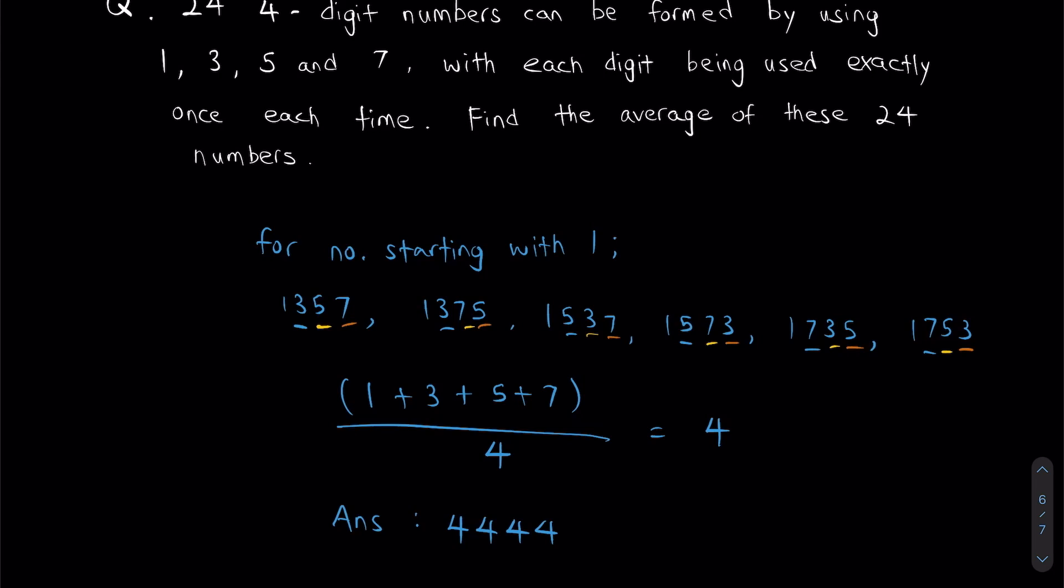How does this work? My thousands digit will be the average of the four numbers. My hundreds digit will be the average of the four numbers. My tens digit will be the average of the four numbers. My ones digit will also be the average of the four numbers. Why? Because regardless of which place I'm looking at, all the numbers will appear the same number of times, as we saw before.